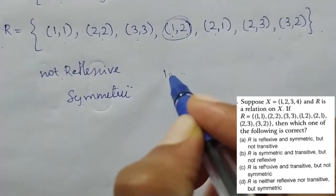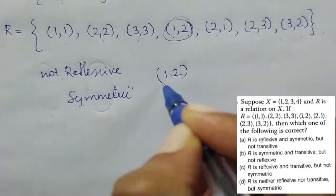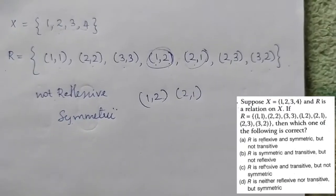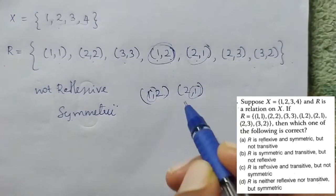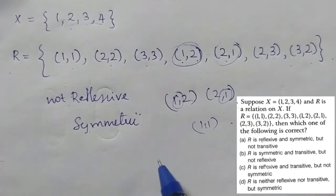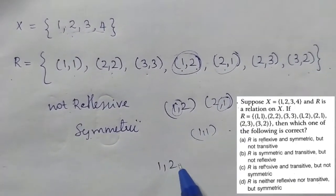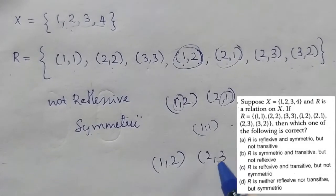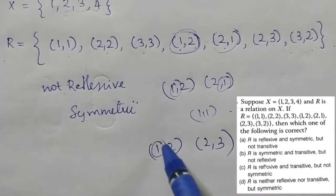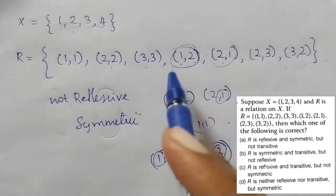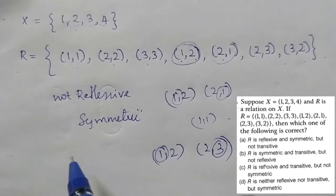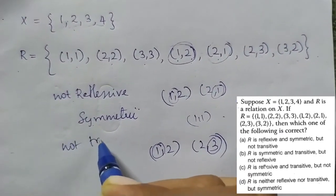We have to check transitivity. We have (1,2) and (2,1) — so we need (1,1). Then check: (1,2) and (2,3) — then we need (1,3). But (1,3) is not in the relation. It is not transitive.